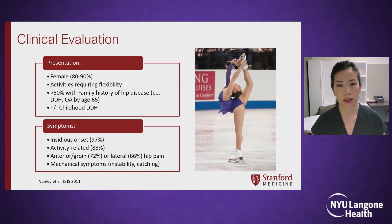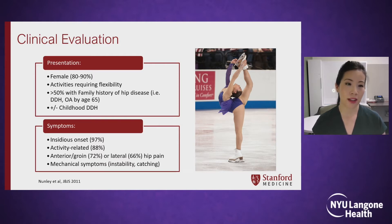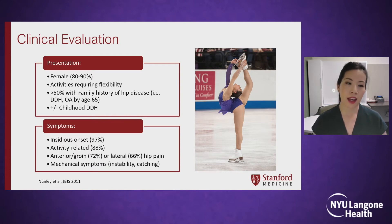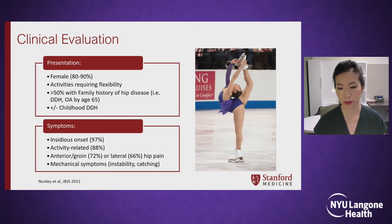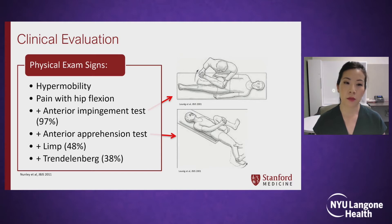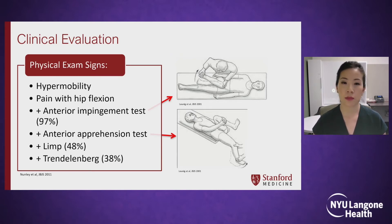Clinically, when you evaluate adolescents and young adults with hip dysplasia, they usually are female, they may be very flexible, and they usually have a family history of some type of hip disease. They may or may not have had childhood DDH. Their symptoms are usually insidious in onset, activity-related, and present in the anterior hip or groin, sometimes in the lateral hip. On physical exam, usually they're very flexible, there's pain with hip range of motion, particularly in hip flexion, with the anterior impingement test as well as the anterior apprehension test. They oftentimes have a limp as well.